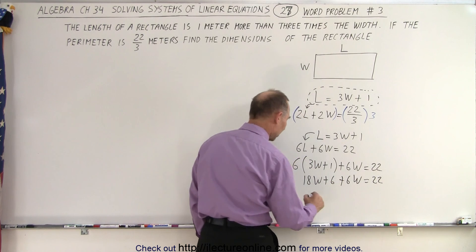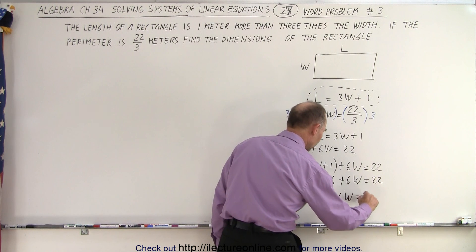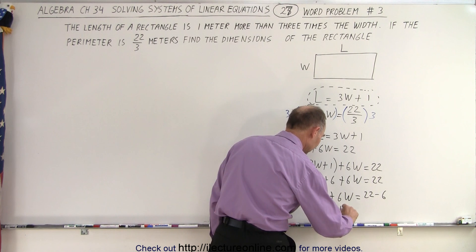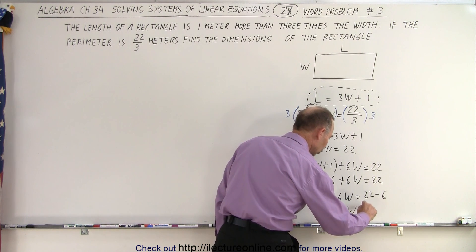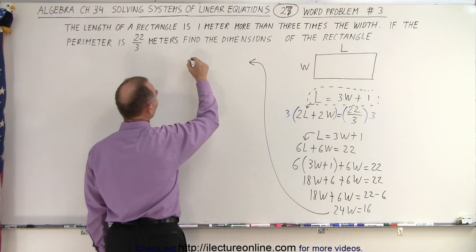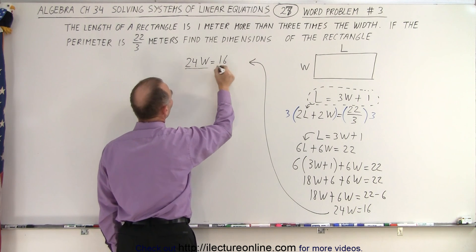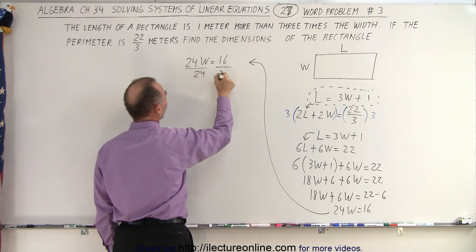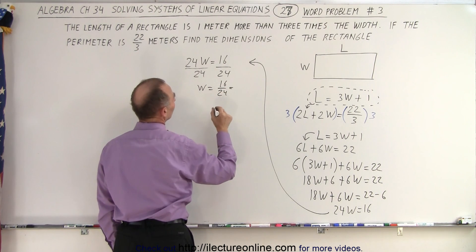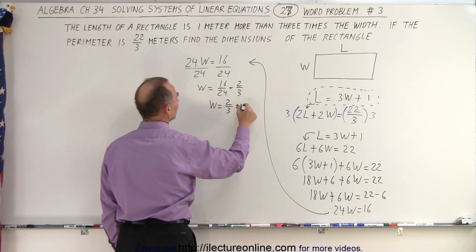Move the plus 6 to the other side. So we have 18 times the width plus 6 times the width is equal to 22 minus 6. And adding those together, we get 24 times the width is equal to 16. Let's rewrite that. We have 24 times the width is equal to 16. So now we divide both sides by 24, and we get the width is equal to 16 divided by 24, which is equal to 2 thirds. So the width is equal to 2 thirds of a meter.